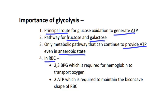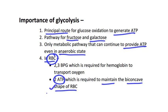In RBC, anaerobic glycolysis takes place because RBCs have no mitochondria. Through anaerobic glycolysis, RBC produces ATP, which maintains the biconcave shape of RBC. Mainly, this ATP produced in RBC is used to maintain the activity of the sodium-potassium pump, which maintains the shape of the RBC.